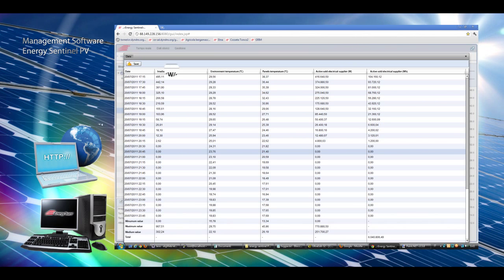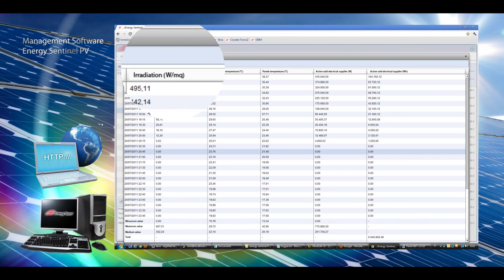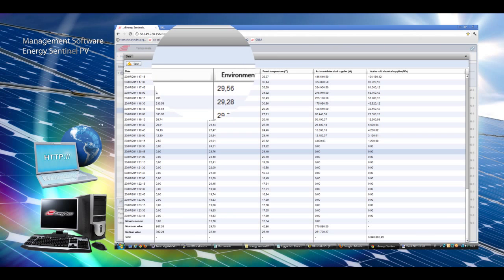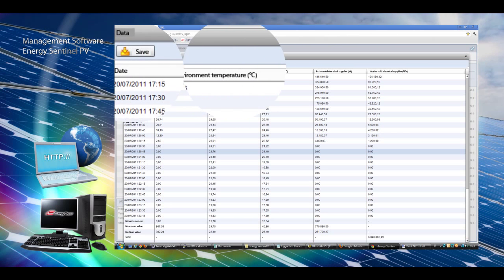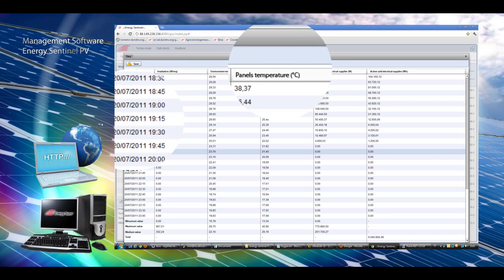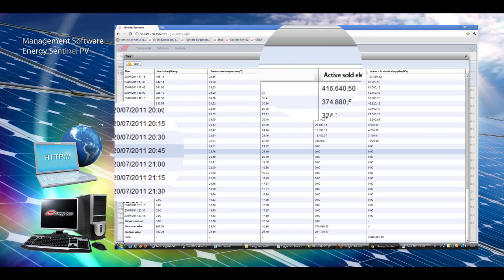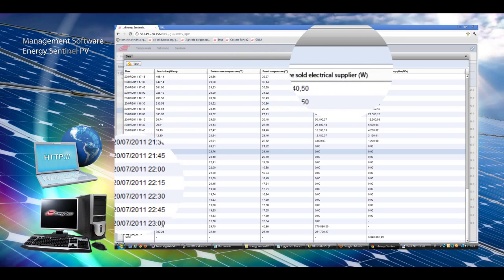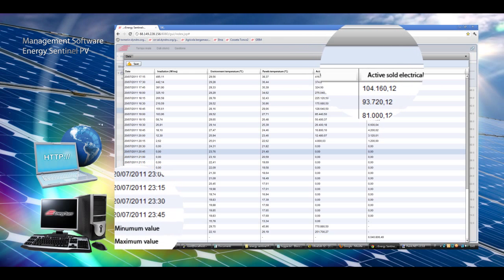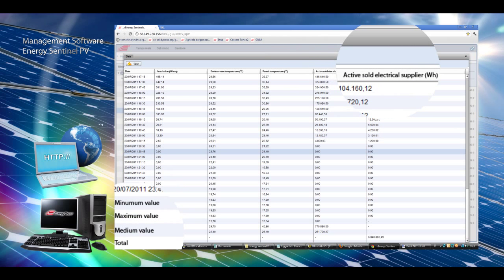In this picture are related data concerning irradiation, environment temperature, photovoltaic panel temperature, power and energy given to national electrical network with the same integration period in use: 5, 15, 30 or 60 minutes, selectable through the program.